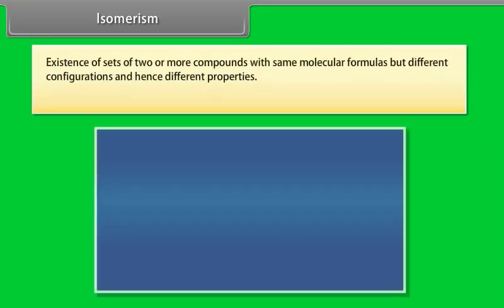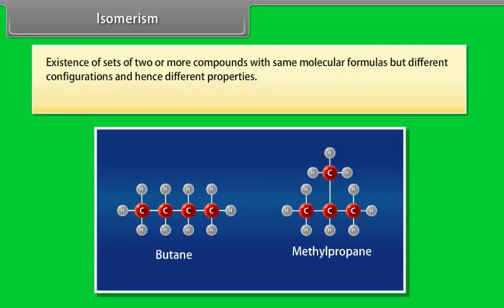Isomerism is the existence of sets of two or more compounds with same molecular formulas but different configurations and hence different properties. The compounds are called isomers.